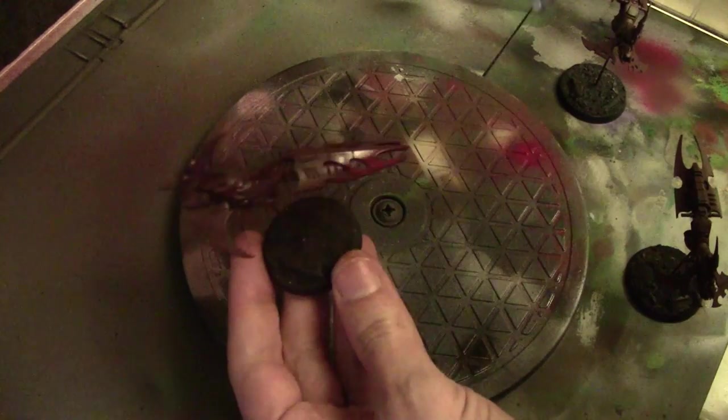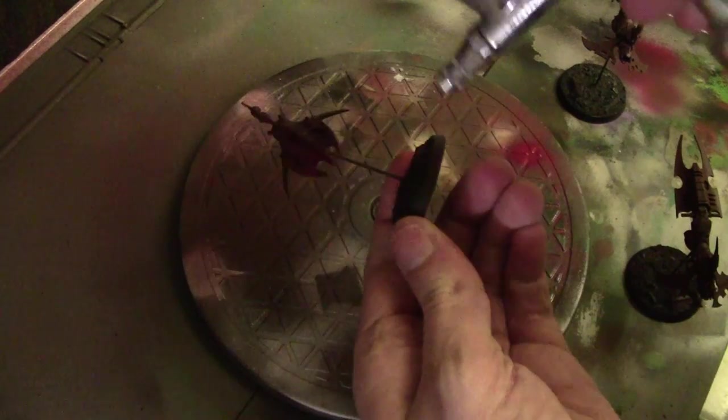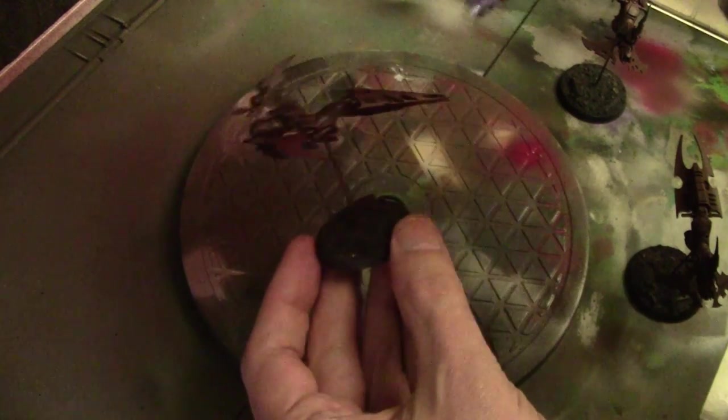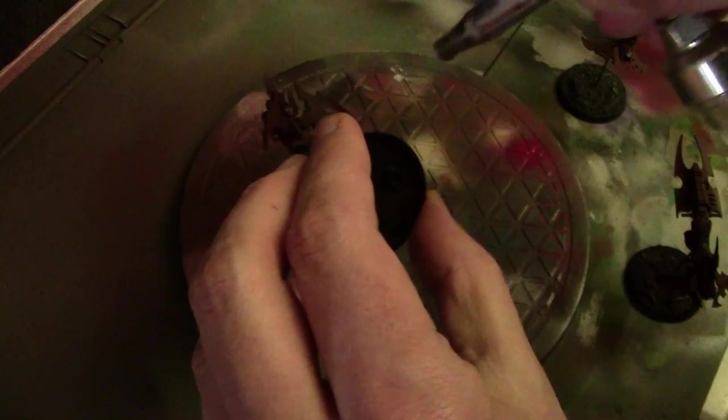Step number two is repeating the exact same process on the exact same areas, this time using Vallejo Model Air 102 Red.